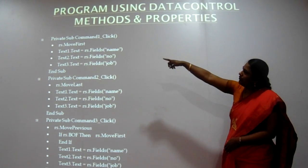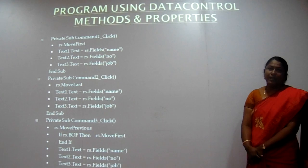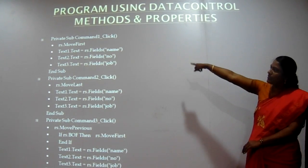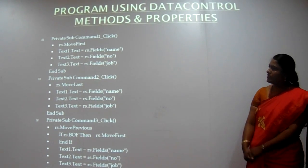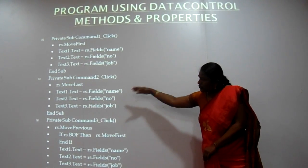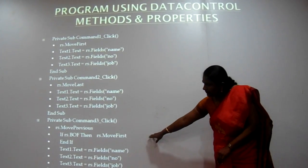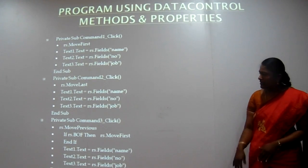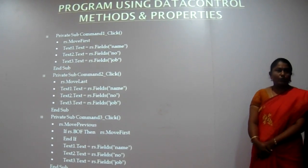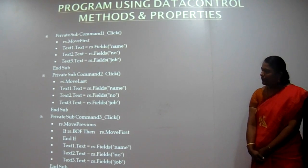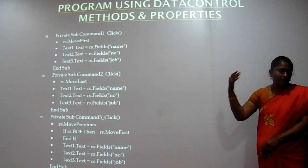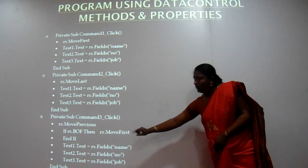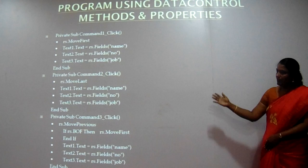The first step is writing the program in our command button — it is an event procedure. We give the MoveFirst method for moving to the first record. In the second button, we move to the last record. In the third button, we move to the previous record. When moving to the previous record, we have to check the beginning of the file, so we use the BOF property to check whether we are at the beginning. If it is the beginning of the file, it displays the first record.